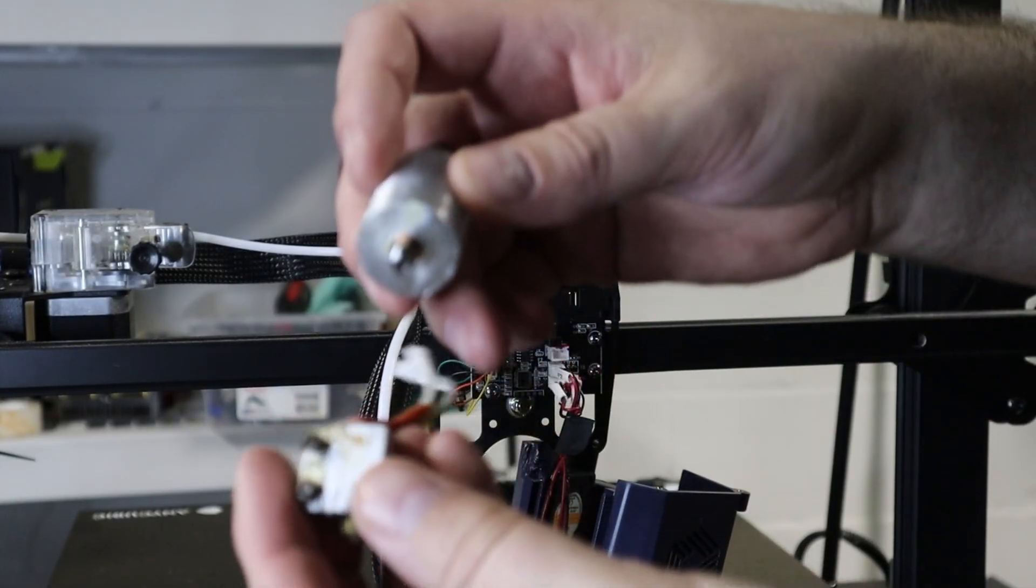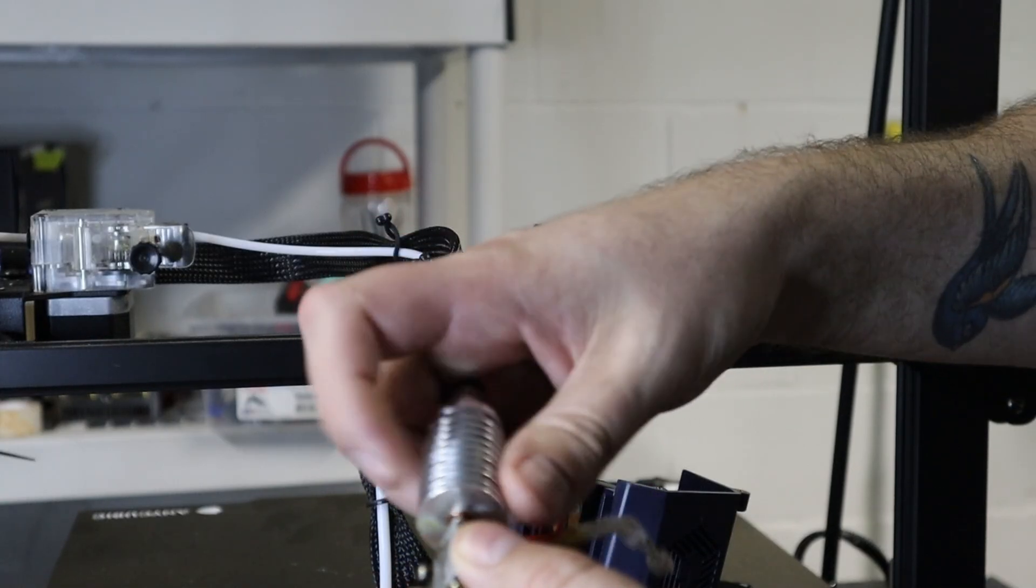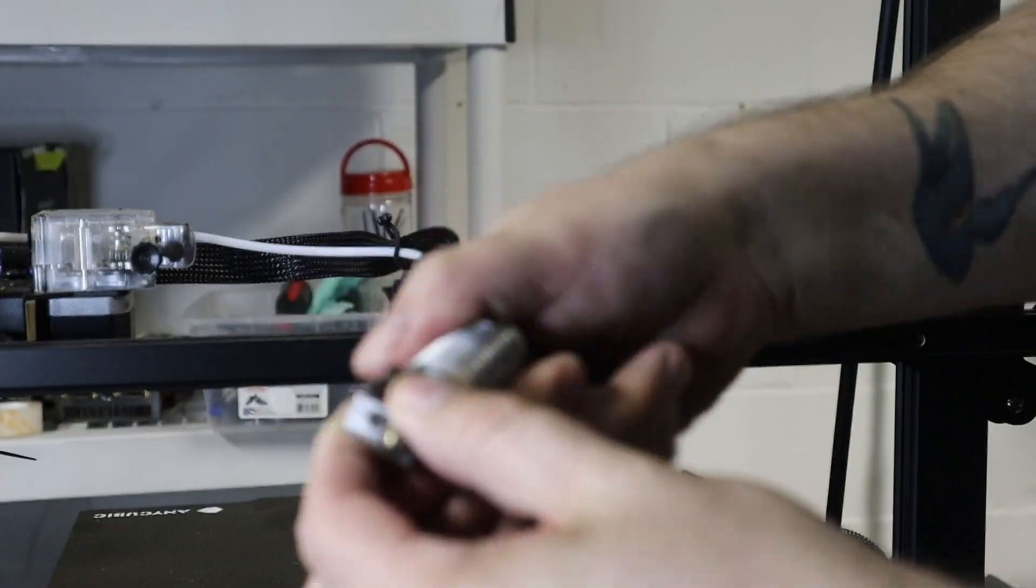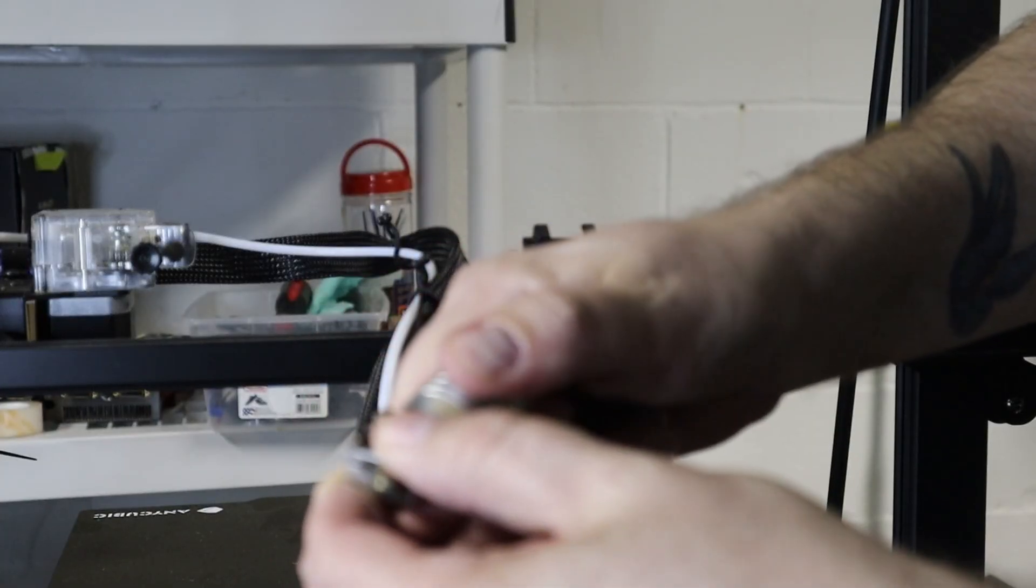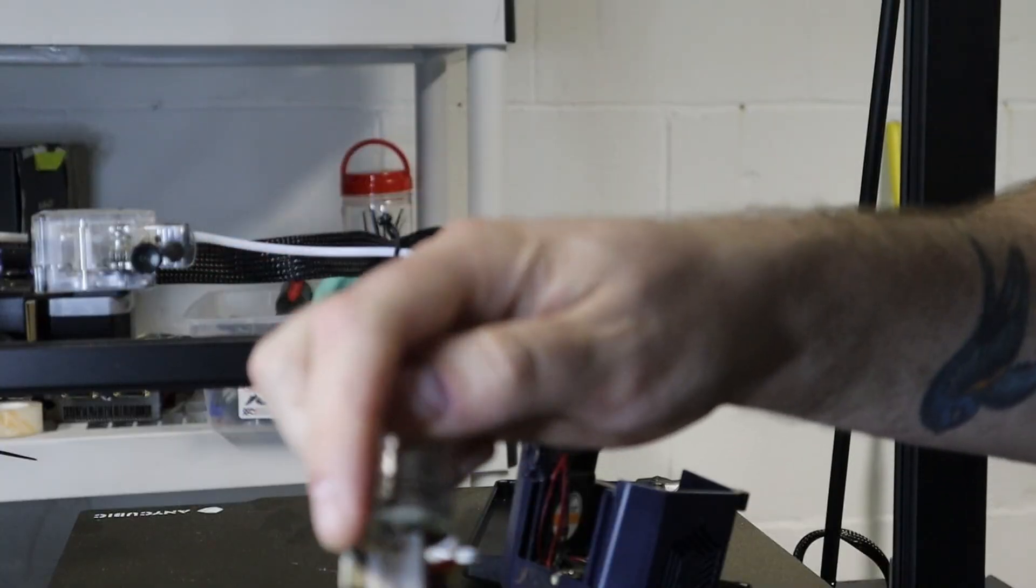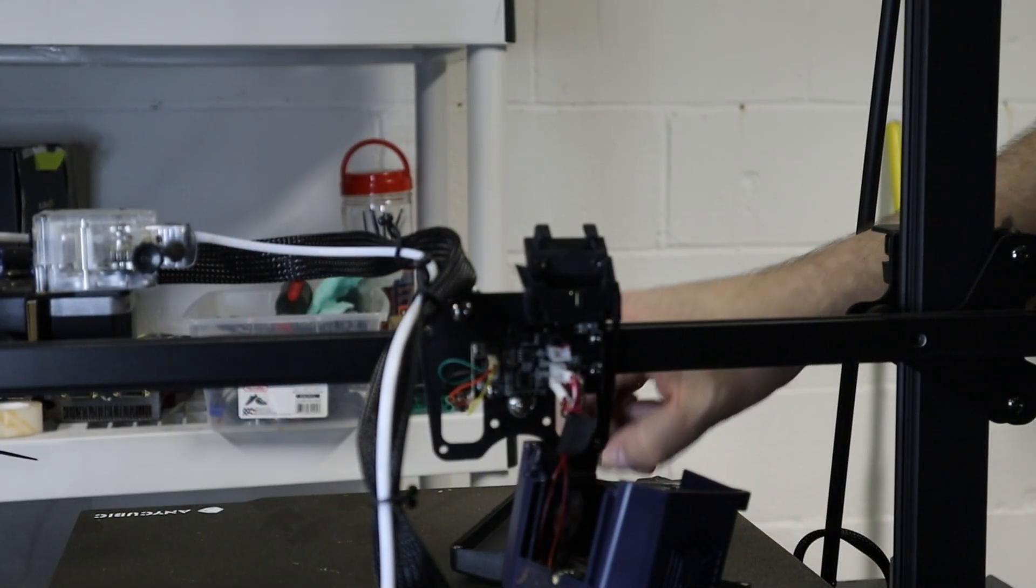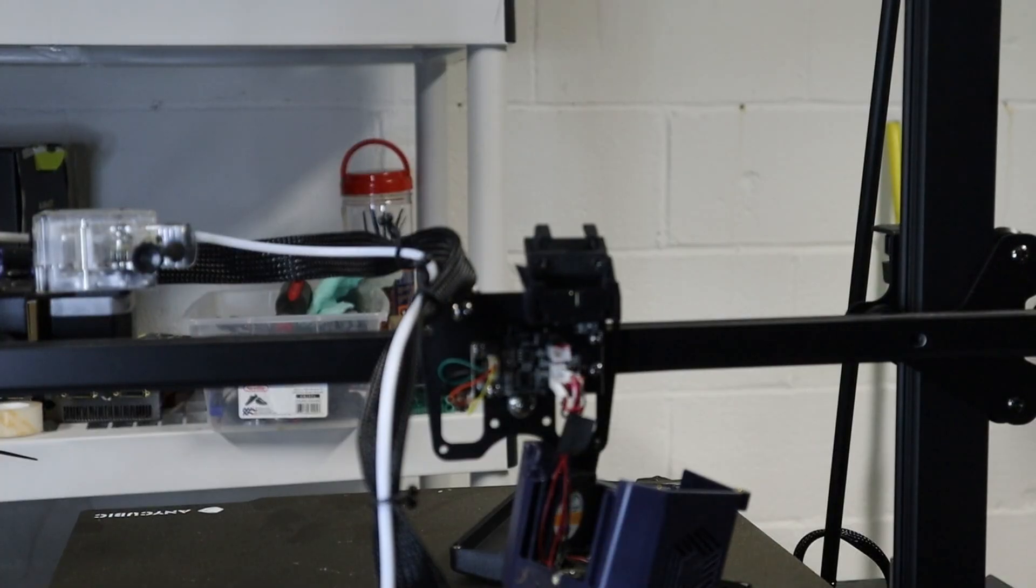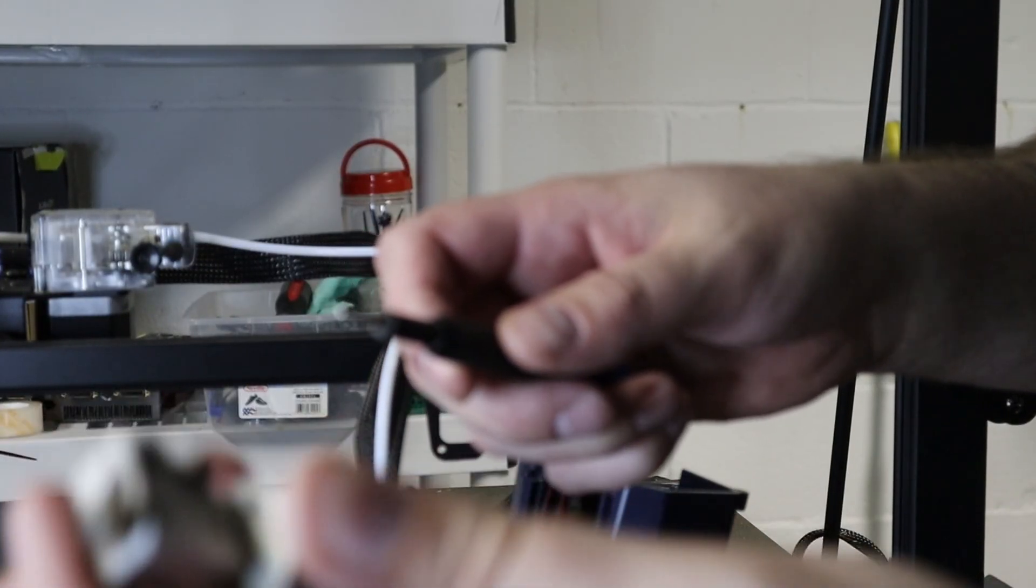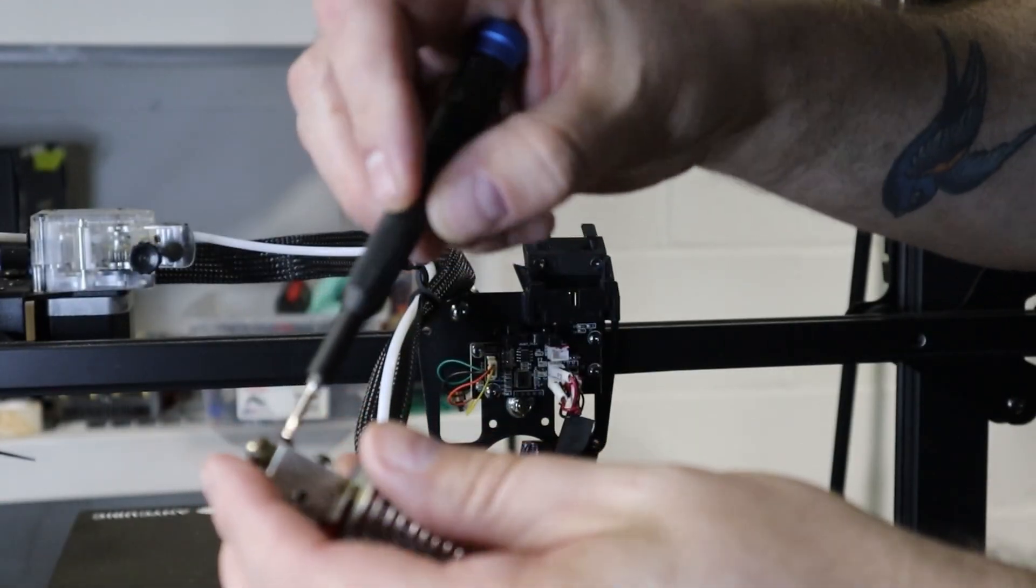I'll take this heat block here and we're going to end up screwing this back in there. It's nice and easy, threads right in. Get in there, get in there tight, and boom. Let's tighten these back up. Again, I'm doing a lot of this repair work with an iFixit kit. Let's tighten these back up.